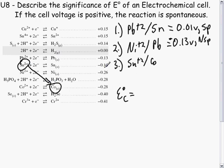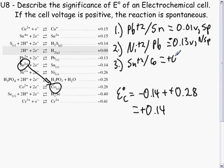Our reduction, negative 0.14 minus negative 0.28, equals plus 0.14, so it definitely is spontaneous. Plus 0.14, spontaneous.